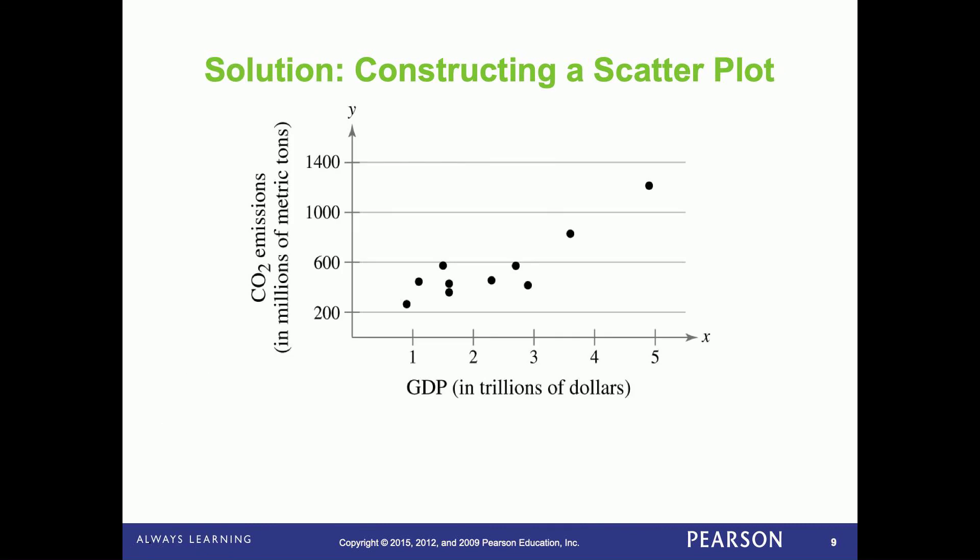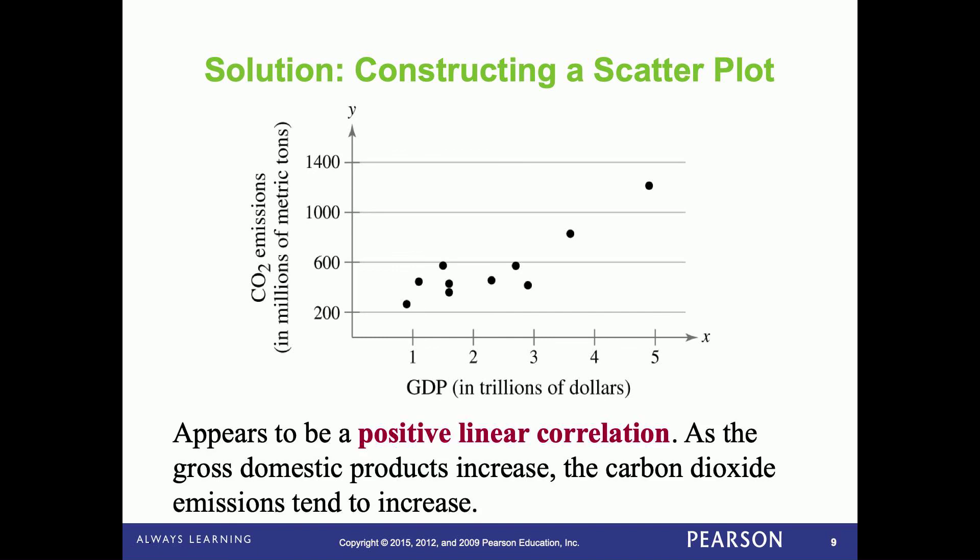Now this is a plot of the gross GDP versus CO2. And notice that there is a positive slope to the scatter plot. So this would be a positive correlation. Appears to be a positive linear correlation. As the gross domestic product increases, the carbon dioxide emissions tend to increase.